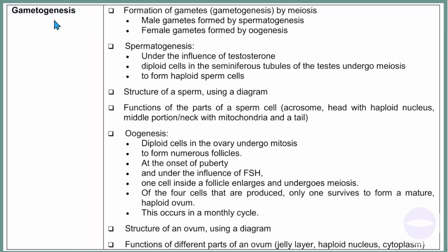Now we go to gametogenesis, which is the formation of gametes by meiosis. Spermatogenesis is the formation of male gametes, while oogenesis is the formation of female gametes. If asked to explain spermatogenesis, use this guideline: under the influence of testosterone, the diploid cell in the seminiferous tubule of the testes undergoes meiosis to form haploid sperm cells. This will get you all the marks.